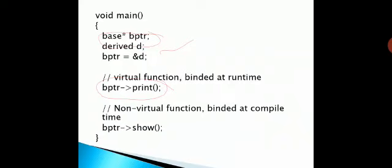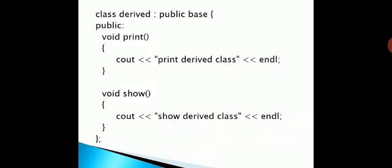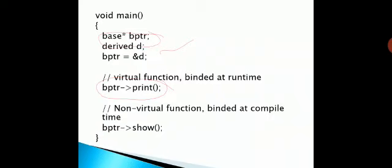When BPTR calls the 'show' function, since 'show' is not declared as virtual, it will call only the base class 'show', not the derived class 'show'. But for 'print', since it is a virtual function, which version gets called is decided at runtime. This is the key difference between normal functions and virtual functions — virtual functions enable runtime polymorphism.